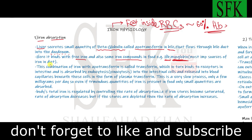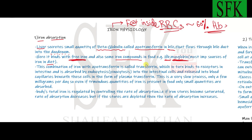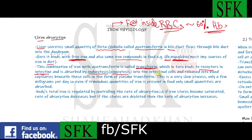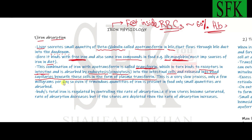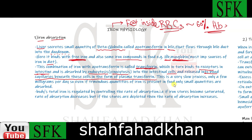Free iron can also be present in the diet. Apotransferrin binds to free iron and iron compounds, and after binding it forms a special transport protein called transferrin. This transferrin binds to receptors in the intestinal mucosa, and through pinocytosis the transferrin is engulfed into the intestinal cells. It is then released into the blood capillaries beneath those cells as plasma transferrin. This is quite a slow process — only a few milligrams per day are absorbed, so even if large quantities of iron are present in food, only small amounts are absorbed.